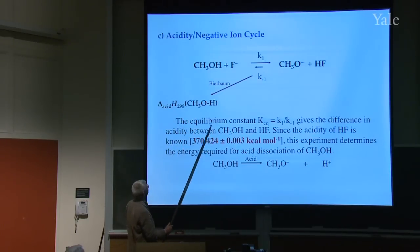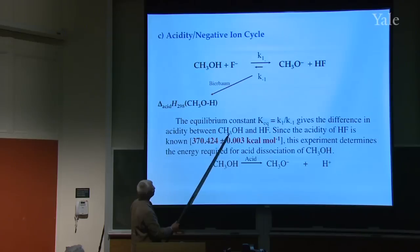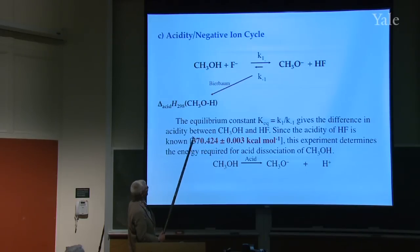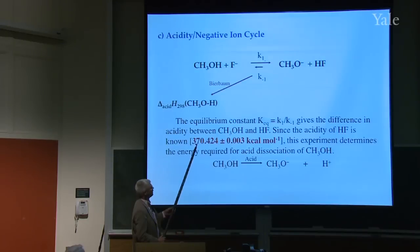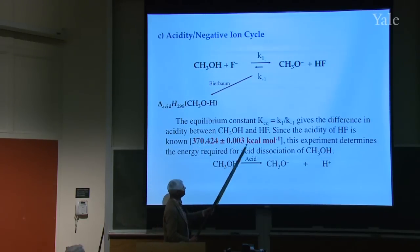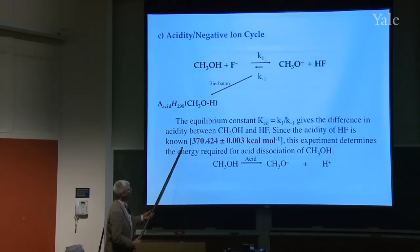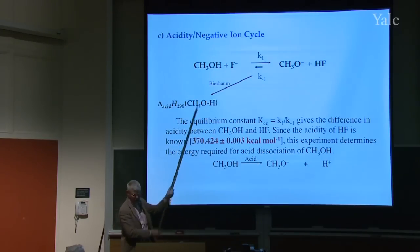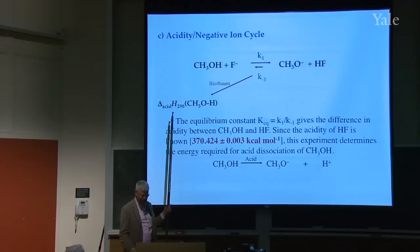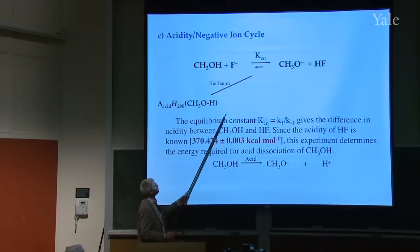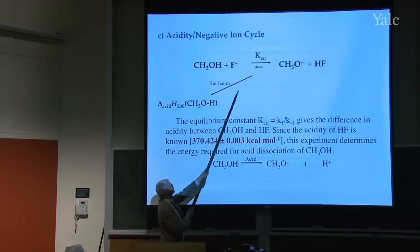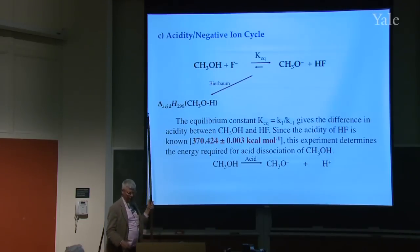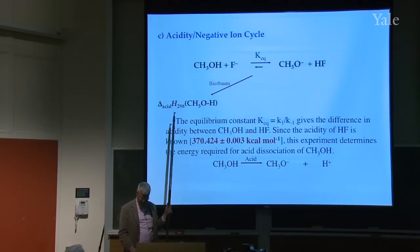The equilibrium constant gives you the difference in acidity between methanol and HF. The acidity of HF is well known — it's 370.424 kcal/mol with a small uncertainty. These two numbers give you the equilibrium constant, and this gives you the gas phase acidity. By measuring the equilibrium constant, Professor Bierbaum has measured the acidity of this species.